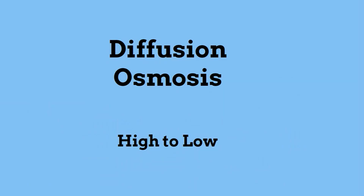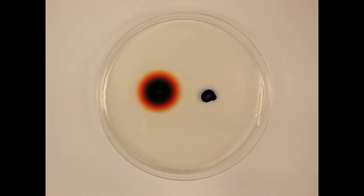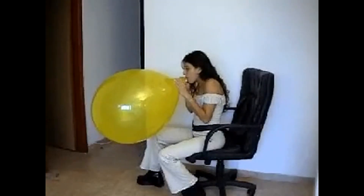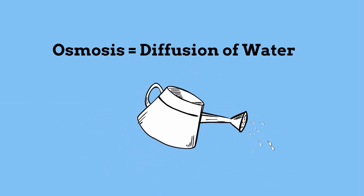Here are two examples of diffusion. Again, objects are moving from high concentration to low concentration. The air in the balloon quickly moved from the high concentration inside the balloon to low concentration out of the balloon. Osmosis is simply the diffusion of water.